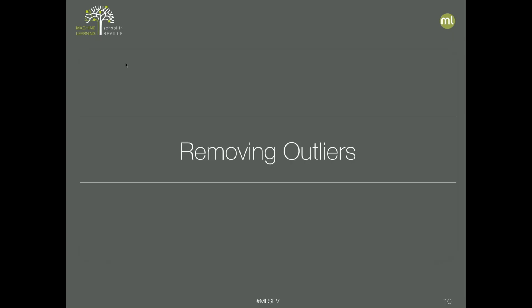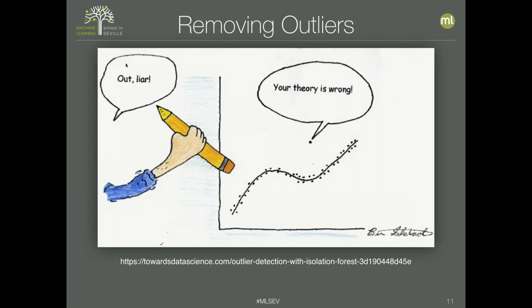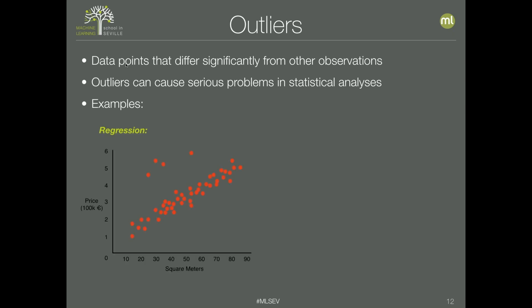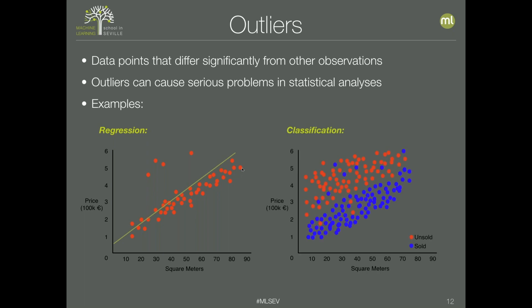Outliers are data points that differ significantly from other observations and can cause serious problems in statistical analysis. For example, in a regression problem predicting flat prices based on square meters, there could be four points on top that are much more expensive than the rest — those could be considered outliers, as they would skew the model.